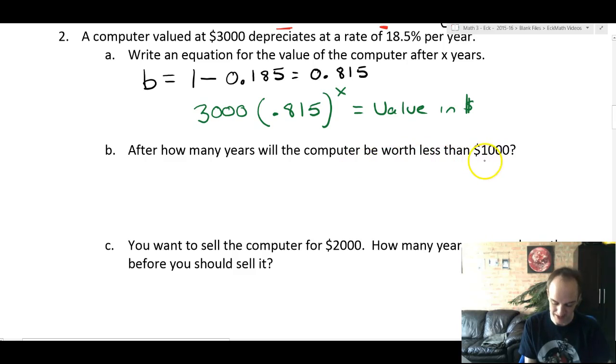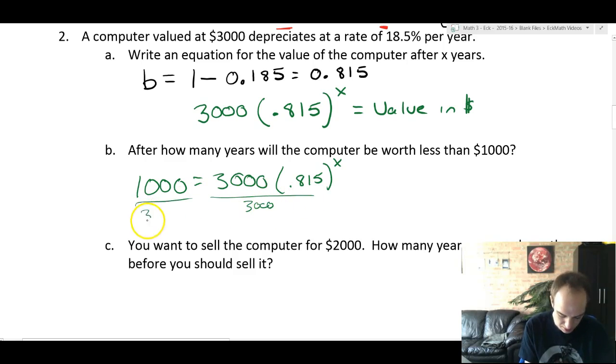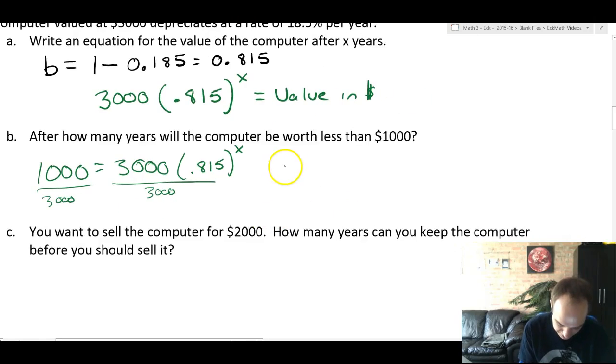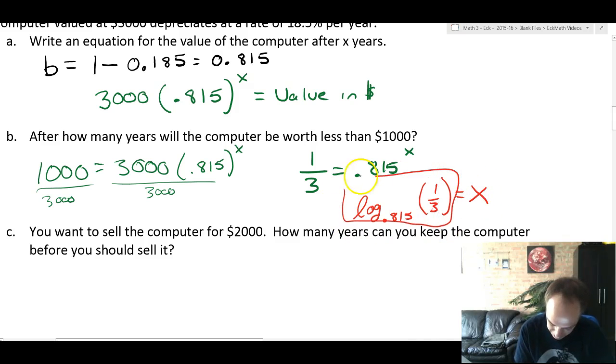After how many years will the computer be worth less than $1,000? Well, we don't know when it's less than $1,000. We can find out when it's exactly equal to $1,000. So we'll write the equation 1,000 equals 3,000 times 0.815 to the x. Let's divide by 3,000. And we'll get 1/3 equals 0.815 to the x. And to solve for x, we take a log. So converting this into log form, we're gonna get, as our final answer, log base 0.815 of 1/3 equals x. And that would tell you the number of years that it would take.